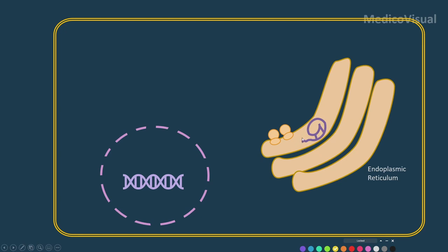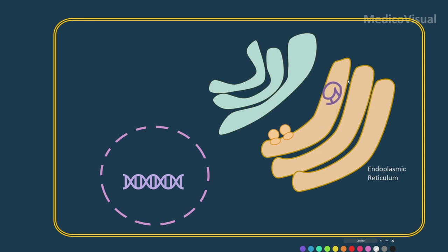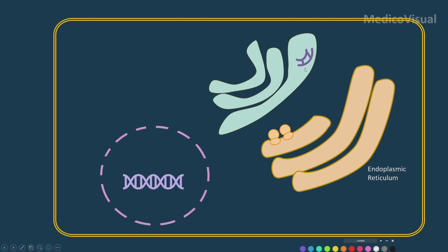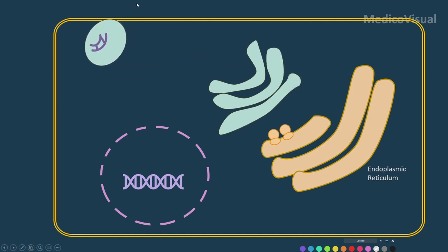The protein synthesized from the insulin mRNA is initially pre-pro-insulin. First the signaling part is removed, converting it to pro-insulin. This buds off from the rough endoplasmic reticulum and goes to the Golgi apparatus, where pro-insulin is further cleaved into mature insulin. It then buds off from the Golgi as a secretory vesicle, which may be secreted outside the cell.